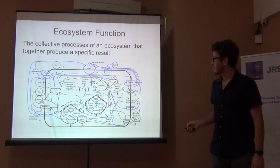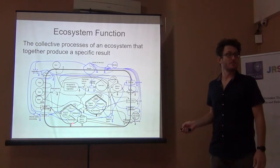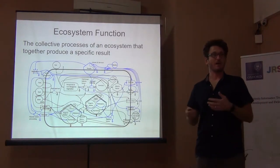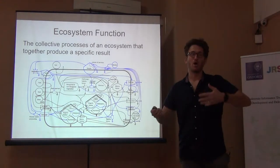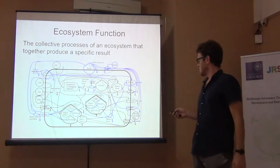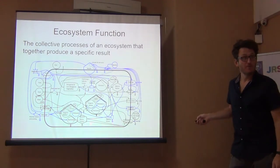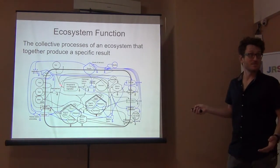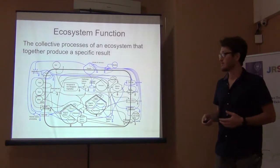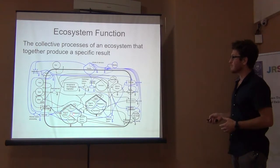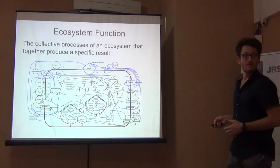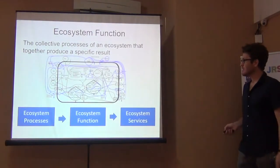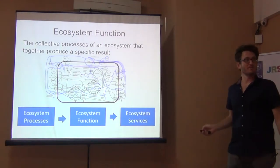The function of an ecosystem is the collective processes that together give a specific result — it's what happens when the ecosystem is doing what it's doing. Looking at these different arrows in the diagram, those are all functions. The conversion of sunlight to biomass through photosynthesis is a process that serves a function. You have the arrangement of the parts of the ecosystem, then the processes and functions that connect everything, and at the end you have ecosystem services that result from all those functions put together.